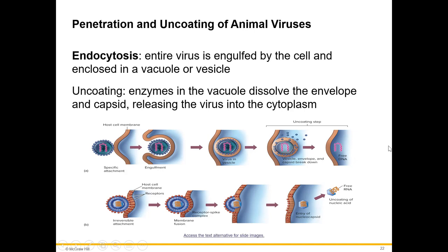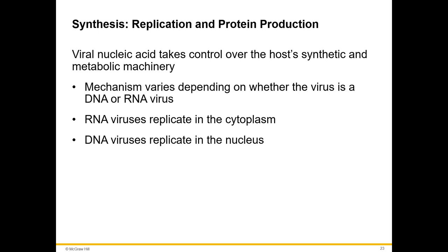Synthesis is the replication and protein production phase. Viral nucleic acid takes control of the host's synthetic and metabolic machinery — the cell functions as a virus-producing factory. The mechanism varies: RNA viruses replicate in the cytoplasm, while DNA viruses replicate in the nucleus, because all the DNA replication machinery is found in the nucleus. So DNA viruses must get their genetic material into the nucleus, while RNA viruses copy themselves in the cytosol.